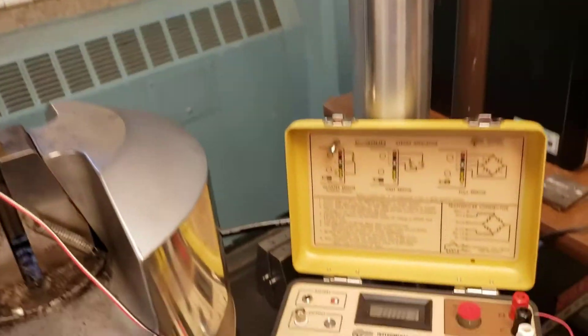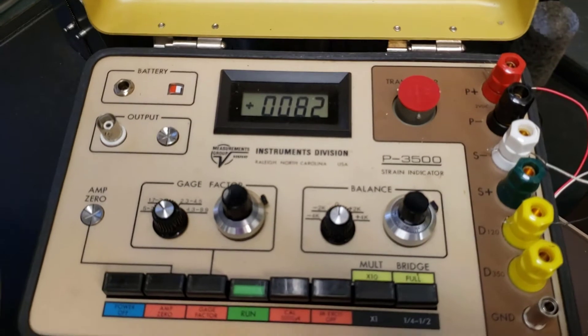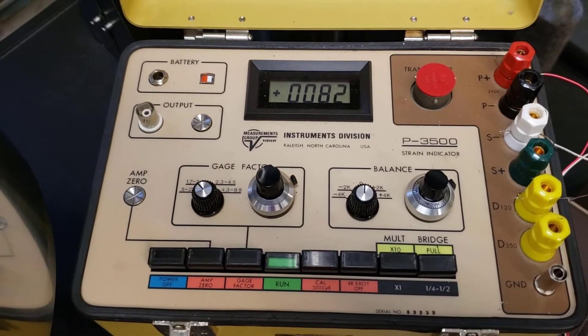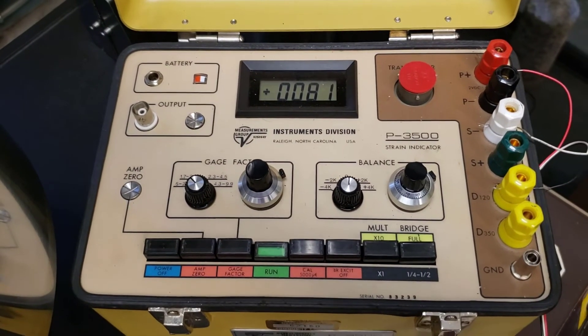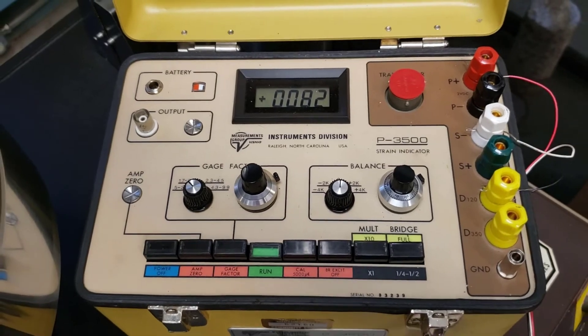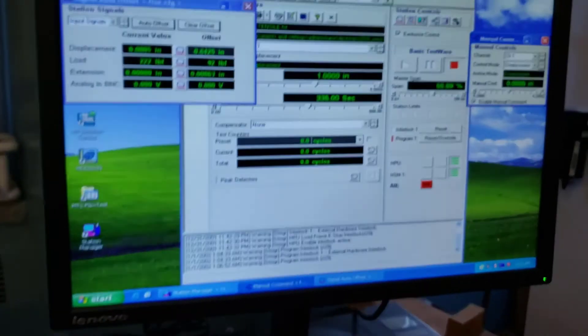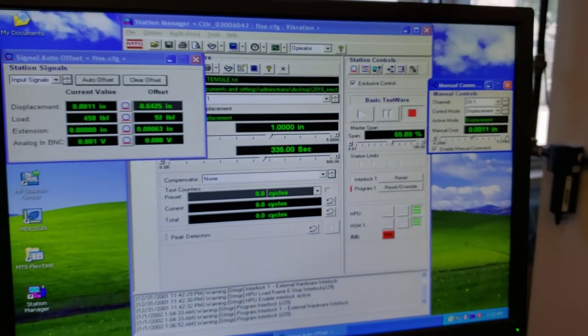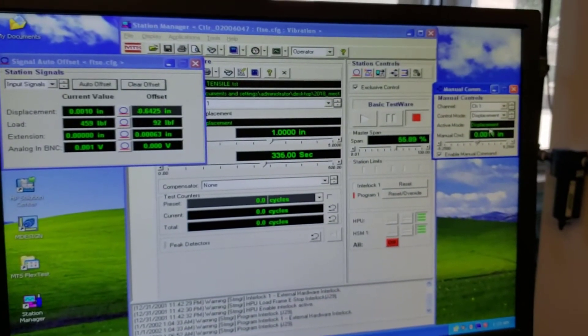And we can see 83 or 82 microstrain. Remember, that's units of inches per inch. I'll do it again. Up to about 10. It's not perfect. It says 11. That's fine.